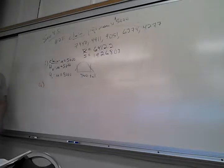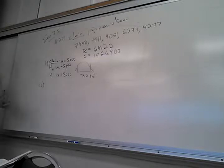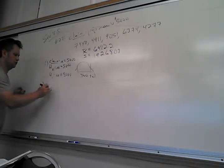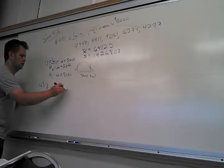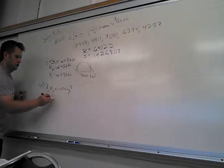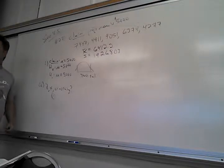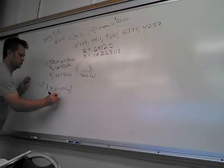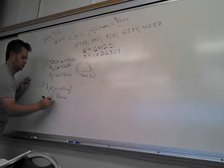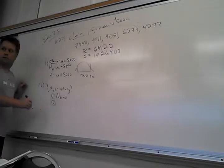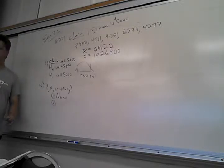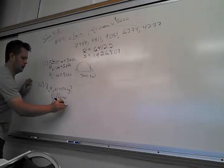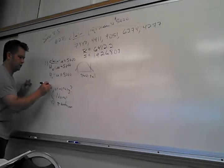Step two should be pretty obvious considering what section we're in, but don't get too complacent. You've got to know what it is that tells you if you can use a Z or a T or nothing. What's one thing we know already? It's normal. And what about the standard deviation? We don't know sigma — we only know S. Therefore I must use T-scores.